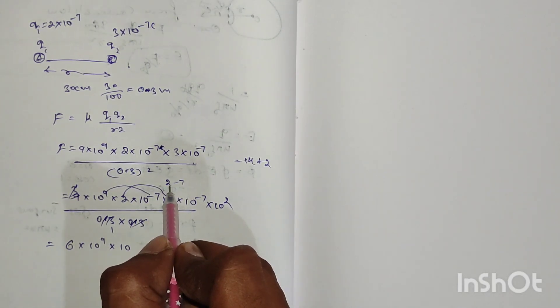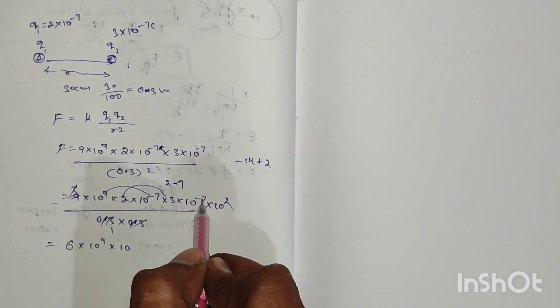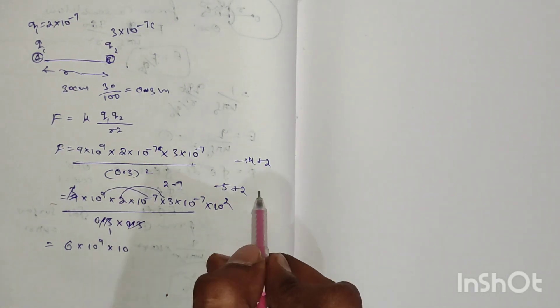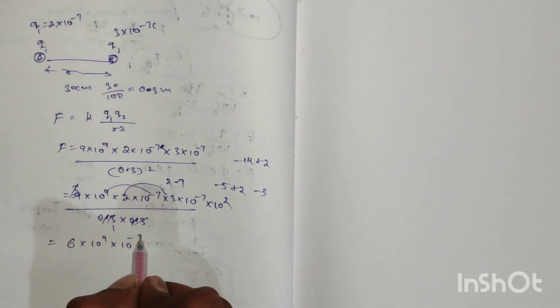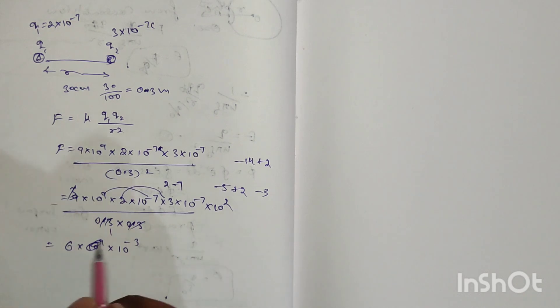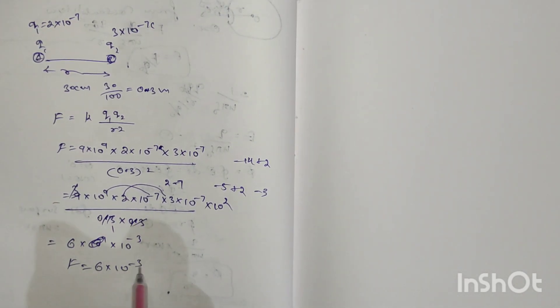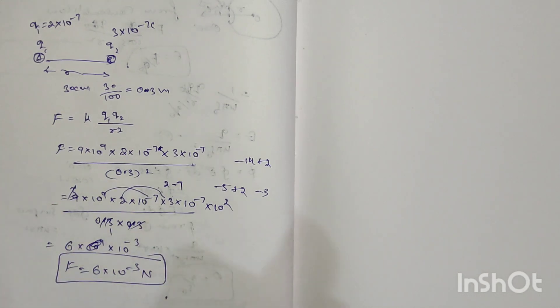Calculating the exponents: 2 - 7 = -5, plus 2 = -3, giving us 10^-3. Therefore, the force is 6×10^-3 Newton.